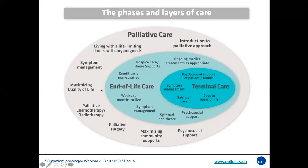When patients become more frail and cancer develops and spreads through the body, we start talking about end-of-life care — the care of patients in the last weeks or few months of their lives — where we try to focus more not only on symptom management but also on spiritual care and psychosocial support, with or without oncological treatments like chemo or radiotherapy with palliative intent. Then in the last days or hours of life we talk about terminal care, where spiritual care and control of symptoms of the terminal phase is predominant.